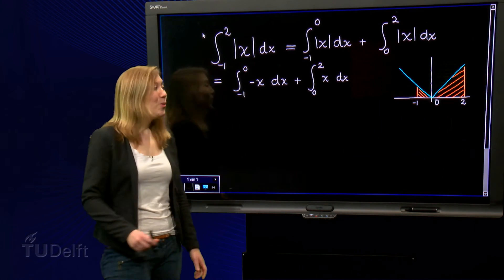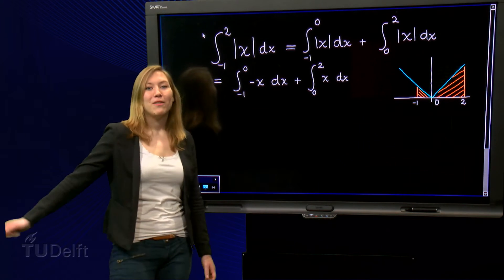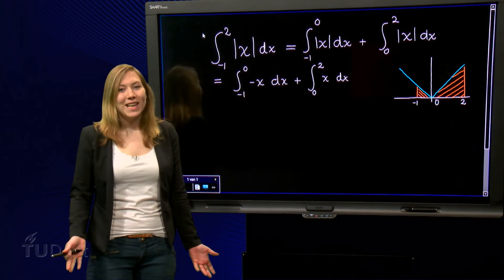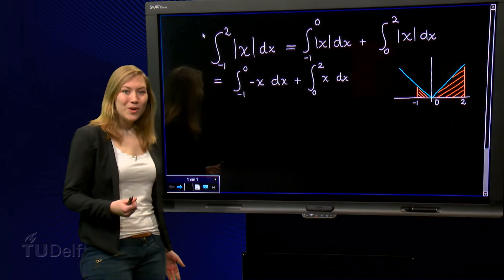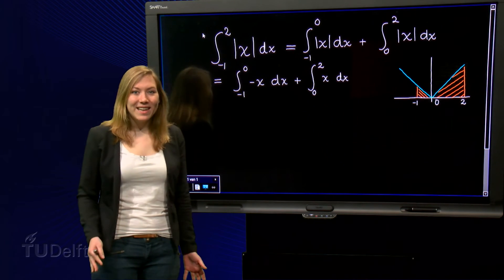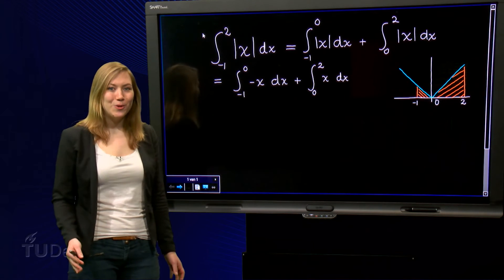Whenever x is less than zero, we get minus x, and whenever x is larger than zero, we simply get x. So we take the integral from minus 1 to 0 of minus x and add that to the integral from 0 to 2 of plus x.